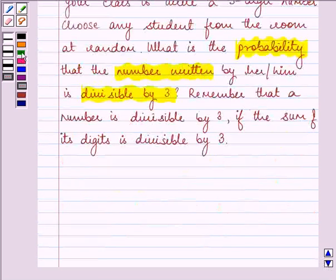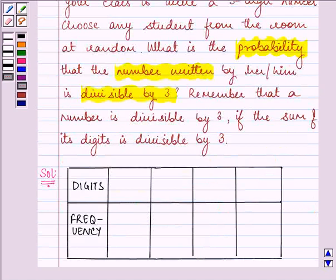How many students are there in your class? Let's say 20 students. Let's say the digits which are written by them is 127, 150, 182 and 199.